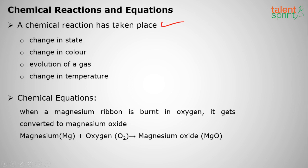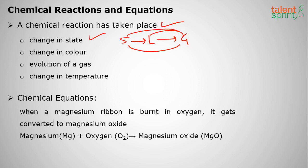When a chemical reaction has taken place, the following features may be observed — any one or all of the features can be observed: change in state (solid to liquid, liquid to gas, gas to solid, or solid to gas), change in color, evolution of gas, change in temperature, and sound. If any of these is observed, it is called a chemical reaction. In a chemical reaction, a new substance will always be formed. A physical change involves no new substance formation.